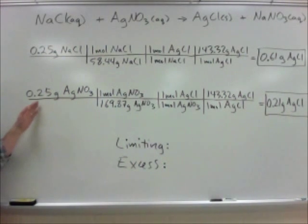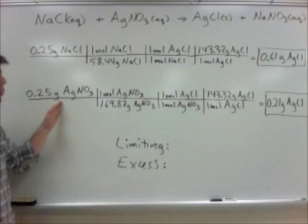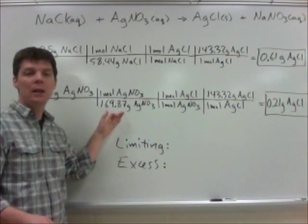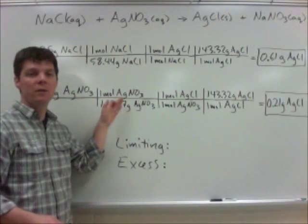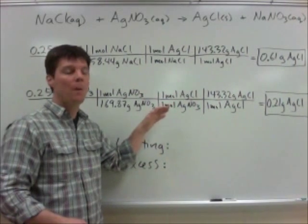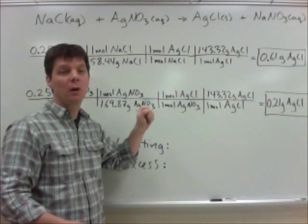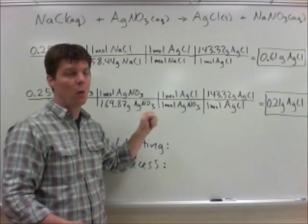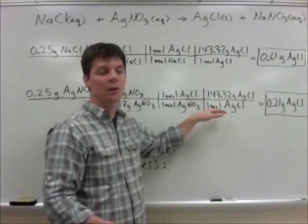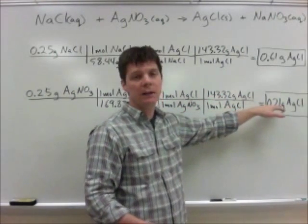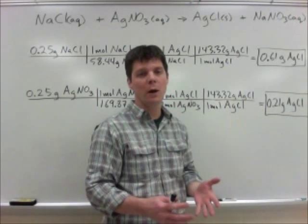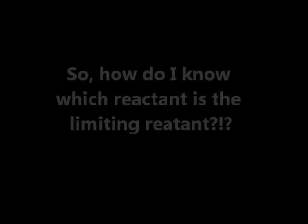That calculation is shown right here. We're starting with 0.25 grams of silver nitrate, converting to moles of silver nitrate, then using the ratio of silver nitrate to silver chloride — again, a one-to-one ratio. Then using the molar mass of silver chloride allows me to calculate that in this scenario I should be able to make 0.21 grams of silver chloride.